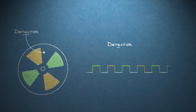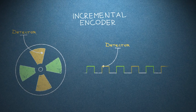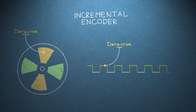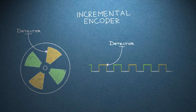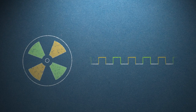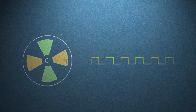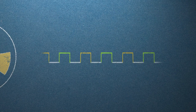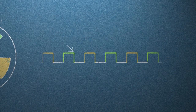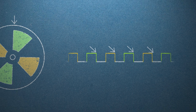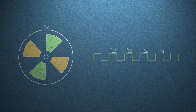As the encoder disc turns, the detector — a Hall effect sensor — outputs a logic high when it sees a north pole and a logic low when it sees a south pole. The easiest way to measure revolutions is to count one type of edge. For example, if we see a falling edge — that is, the detector's output goes from high to low — then we know the disc has turned 90 degrees. If we see four falling edges, we know the disc has made one complete revolution.